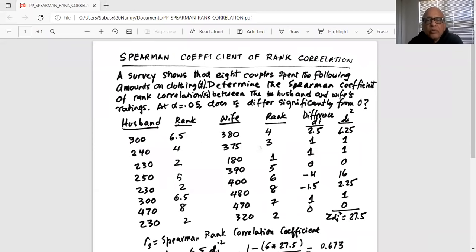So here is the problem of Spearman coefficient of rank correlation. A survey shows that eight couples spent the following amounts on clothing. Determine the Spearman coefficient of rank correlation RS between the husband and wife's ratings. At alpha equal to 0.05, RS which is the Spearman rank correlation coefficient differs significantly from zero.